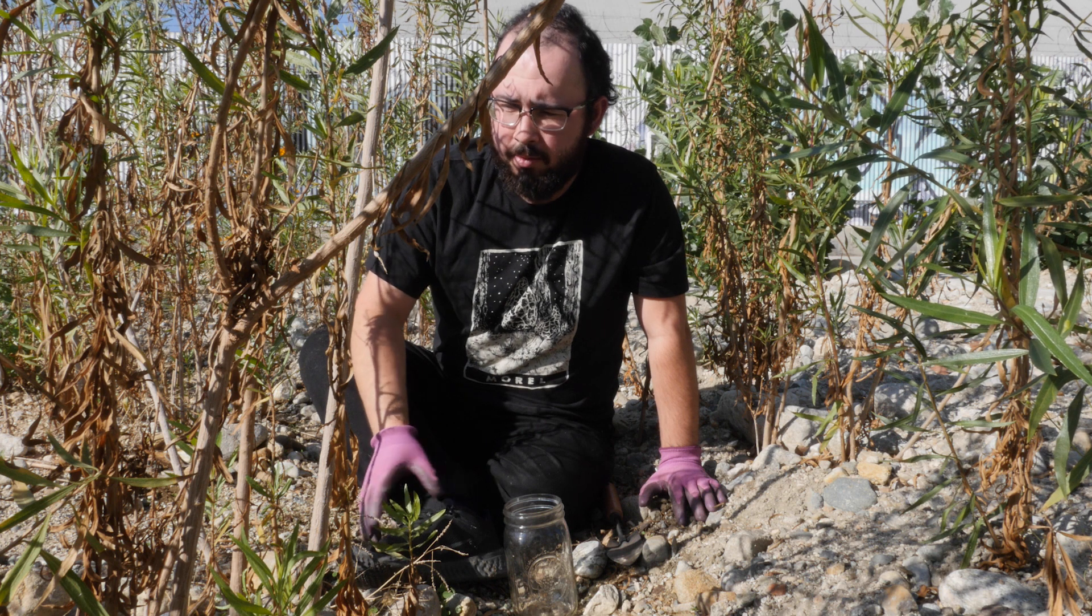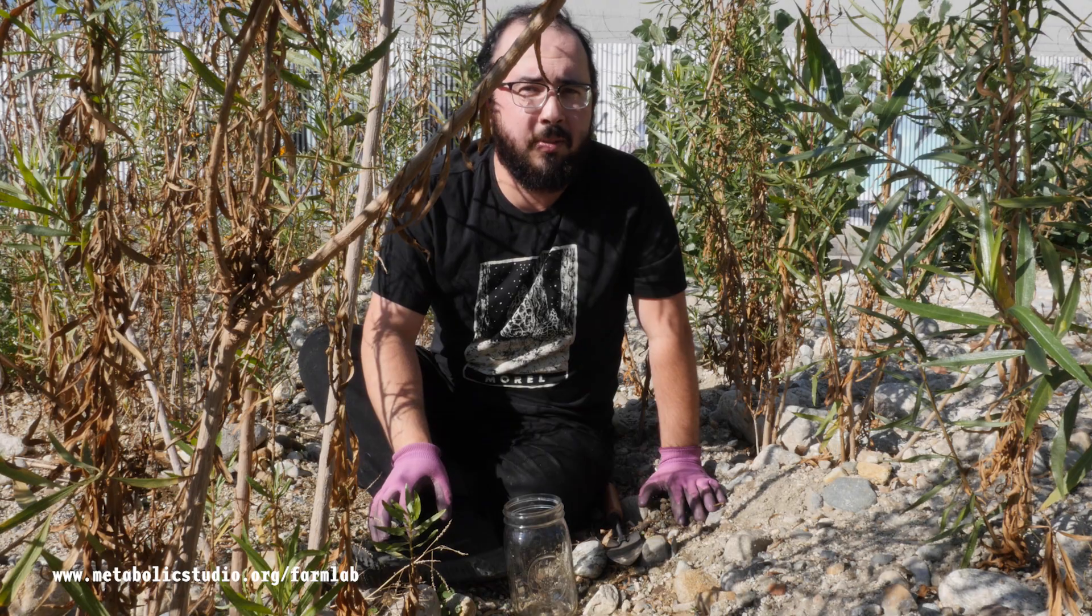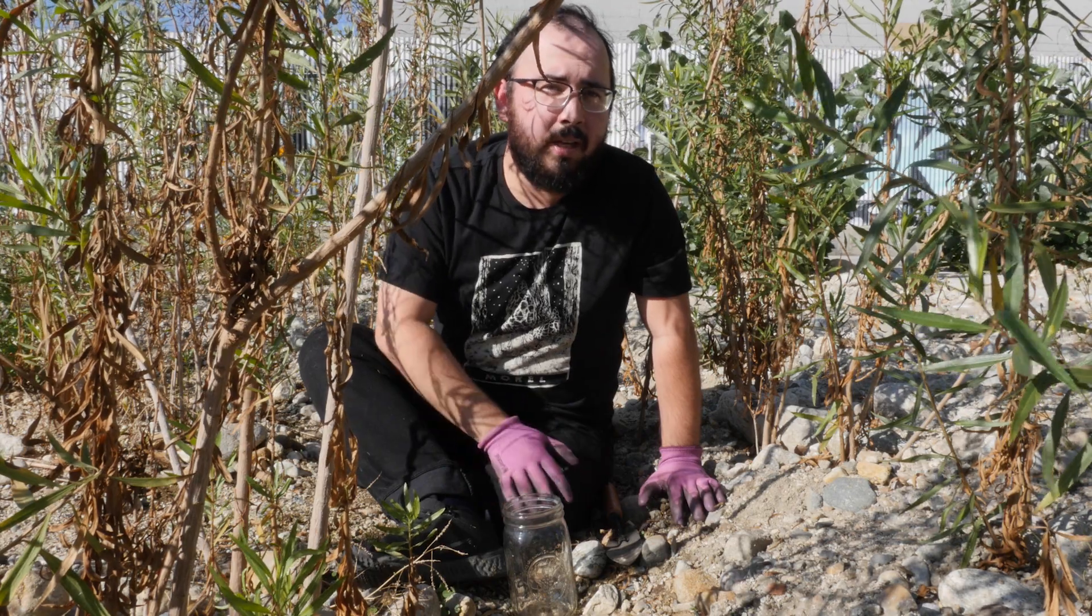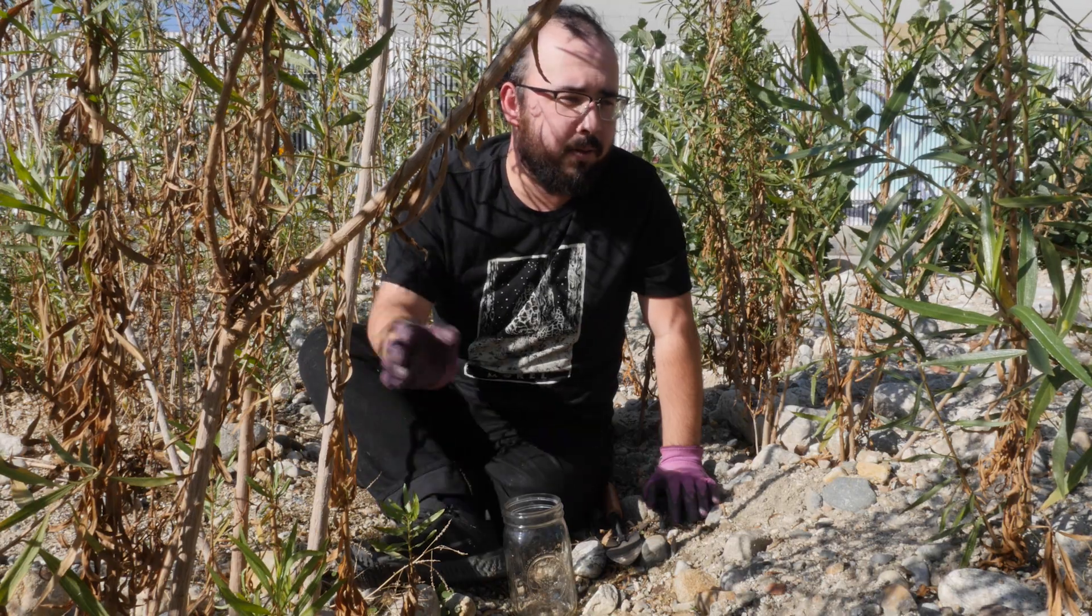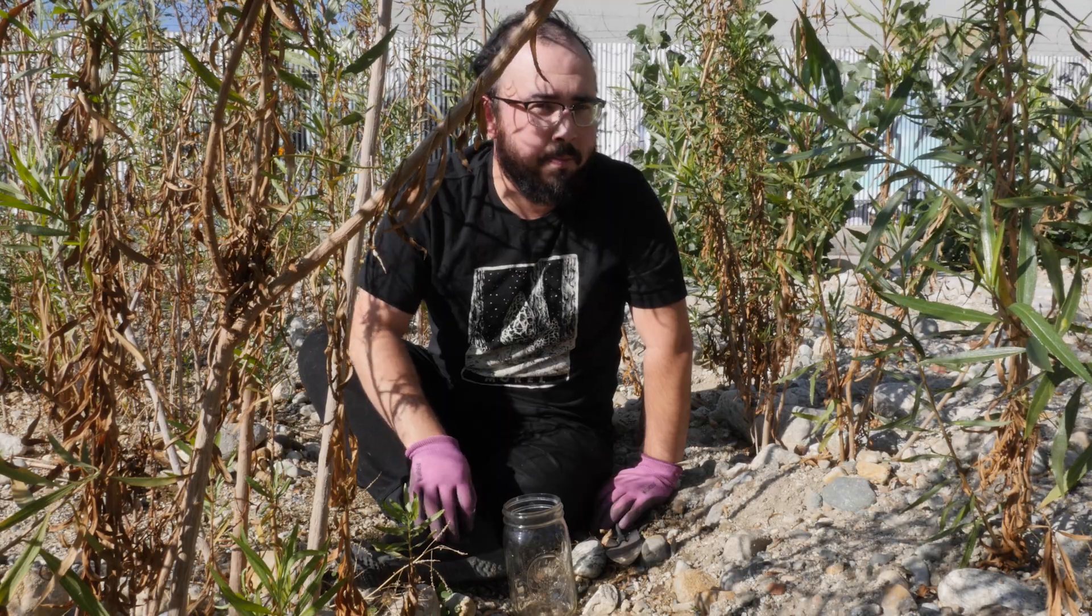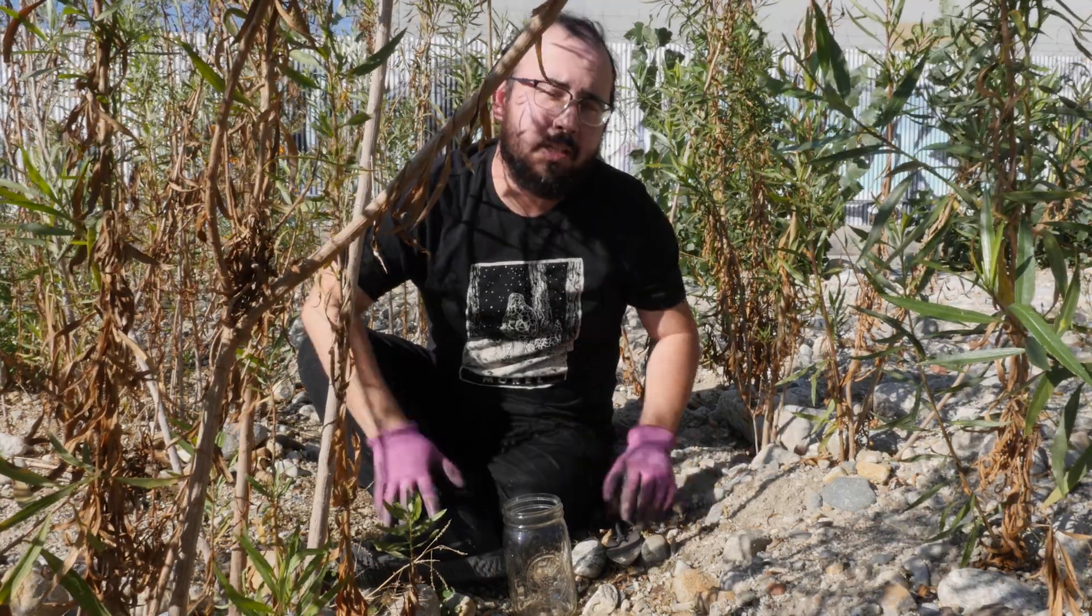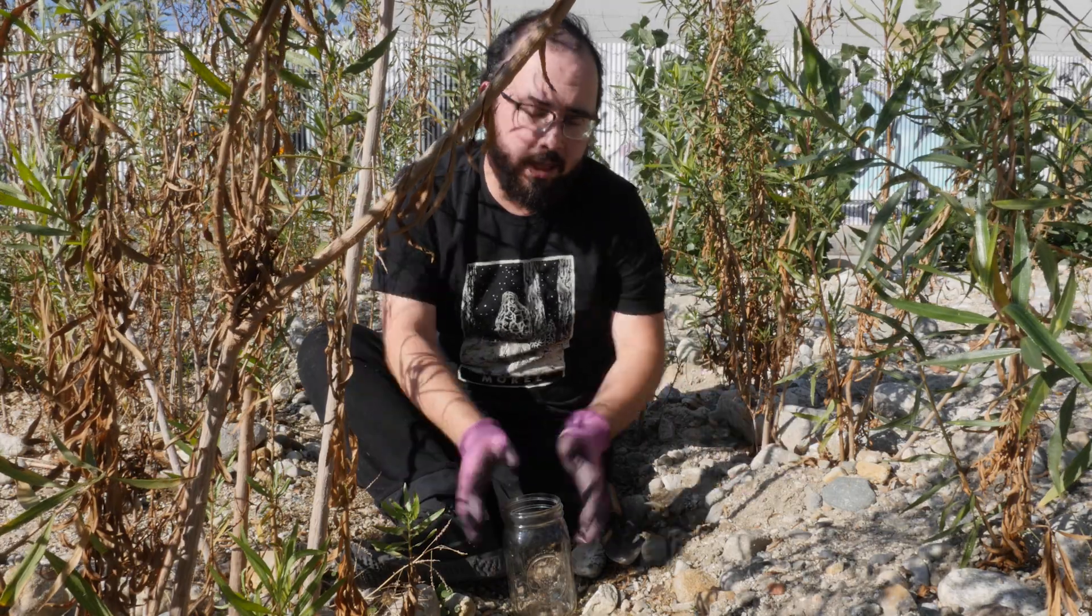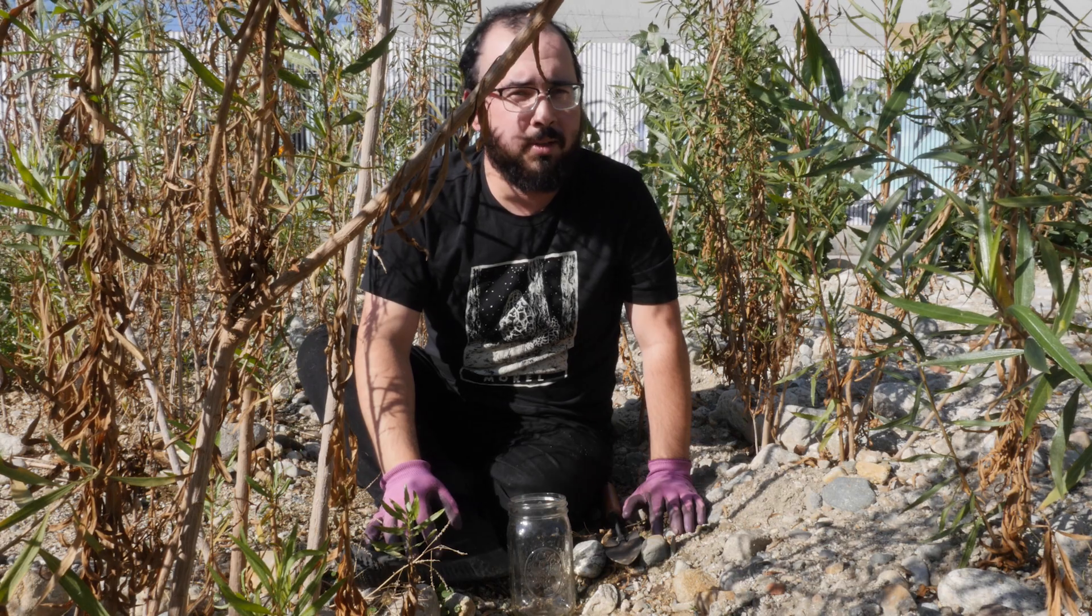We are in what we call circle 4 or the floodplain circle here at Undevelopment 1 and what we're doing is we are collecting some root samples for more microscopy and more study of mycorrhizal fungi. So what you're seeing at these plants all around us are mule fat, Baccharis salicifolia. Essentially we're just picking different points in this circle and digging up some roots, collecting them into a jar, and then we're going to take them back to the lab to process them and look at them underneath the microscope to see what's going on.